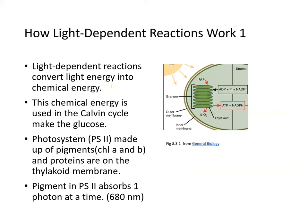Light-dependent reactions convert light energy into chemical energy. This chemical energy is then used in the Calvin cycle to produce glucose. The ATP will be used in the stroma — also called the dark reaction or the Calvin cycle.